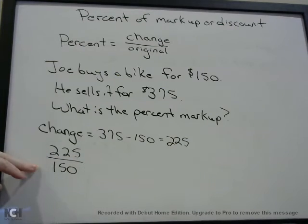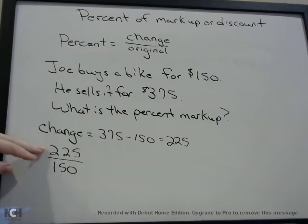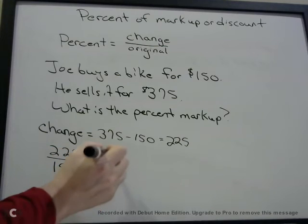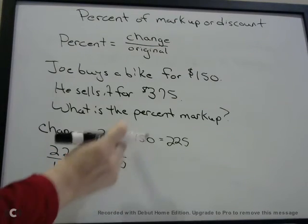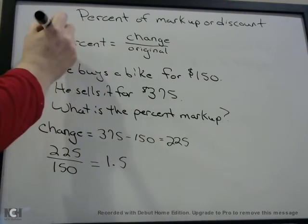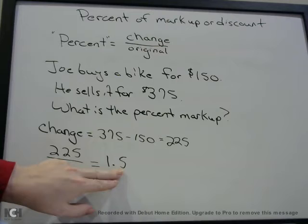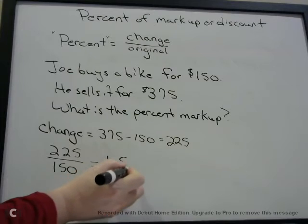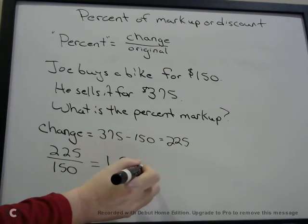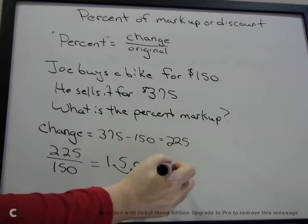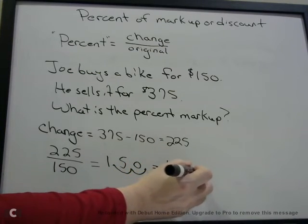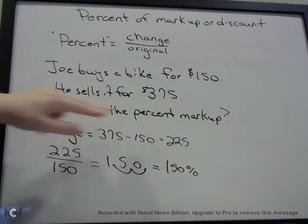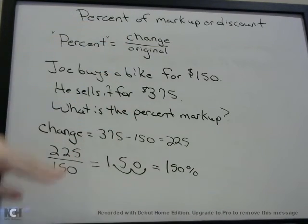Now take the change over the original price: $225 divided by $150. This looks like a fraction, and fractions are just divisions. Plug that into your calculator: $225 divided by $150 equals 1.5. That is not the percentage yet — you have to change this to a percentage by moving the decimal two places to the right, giving you 150%. So the percent markup is 150%.